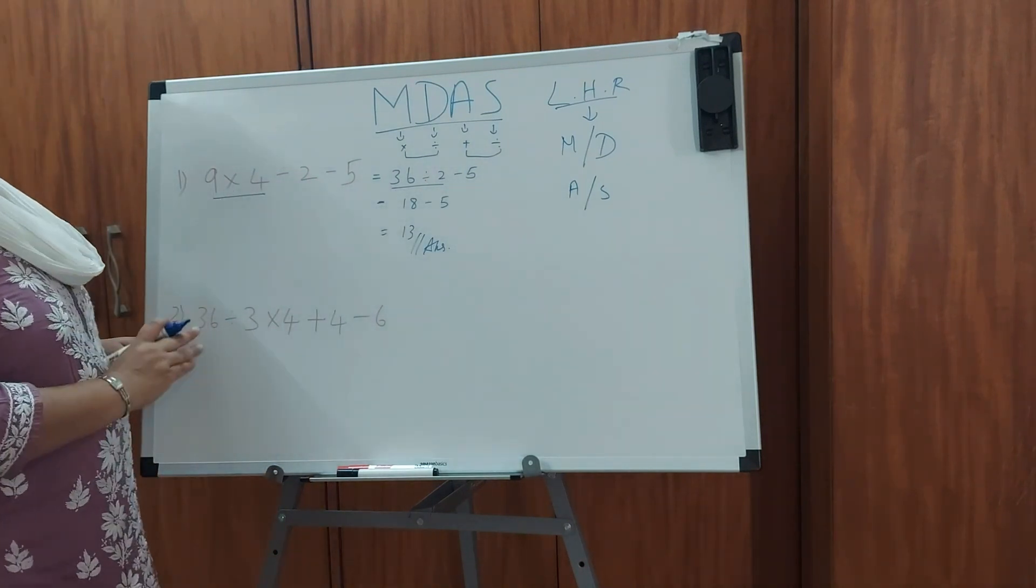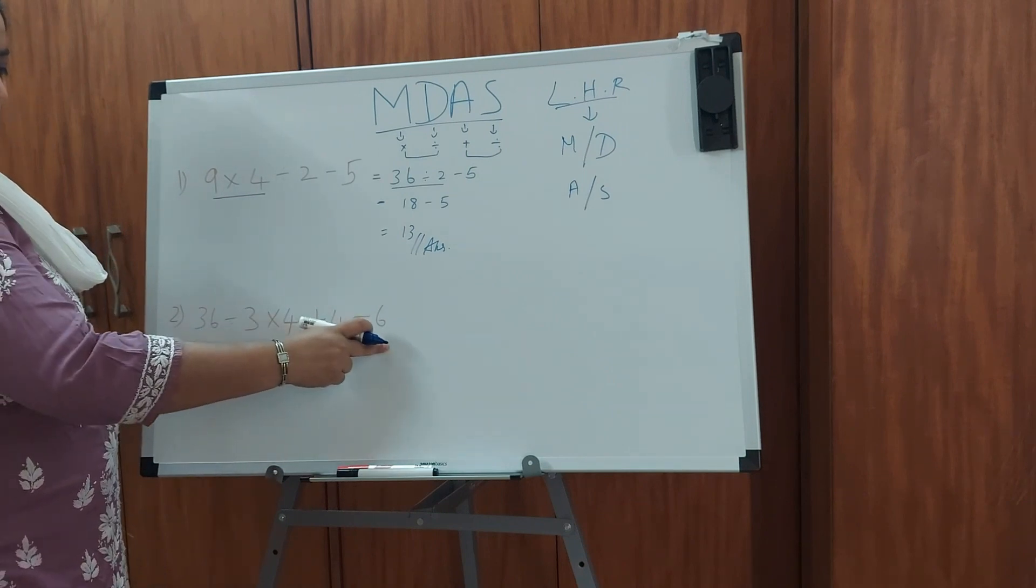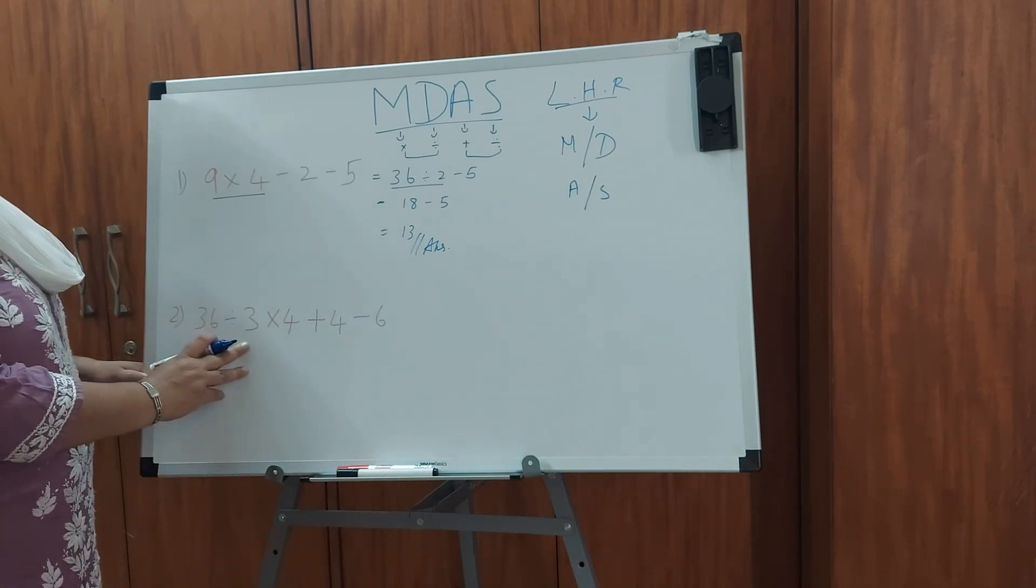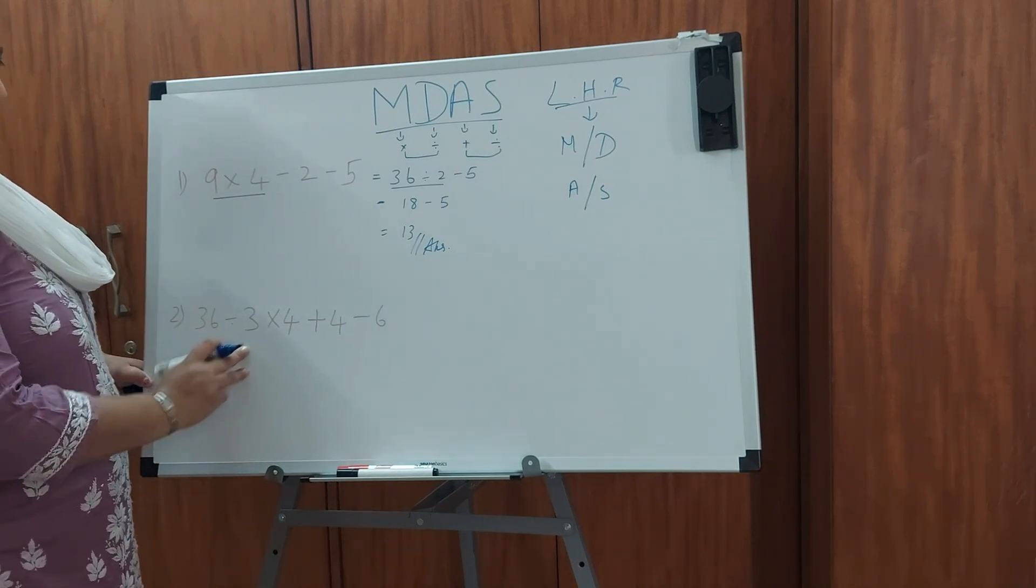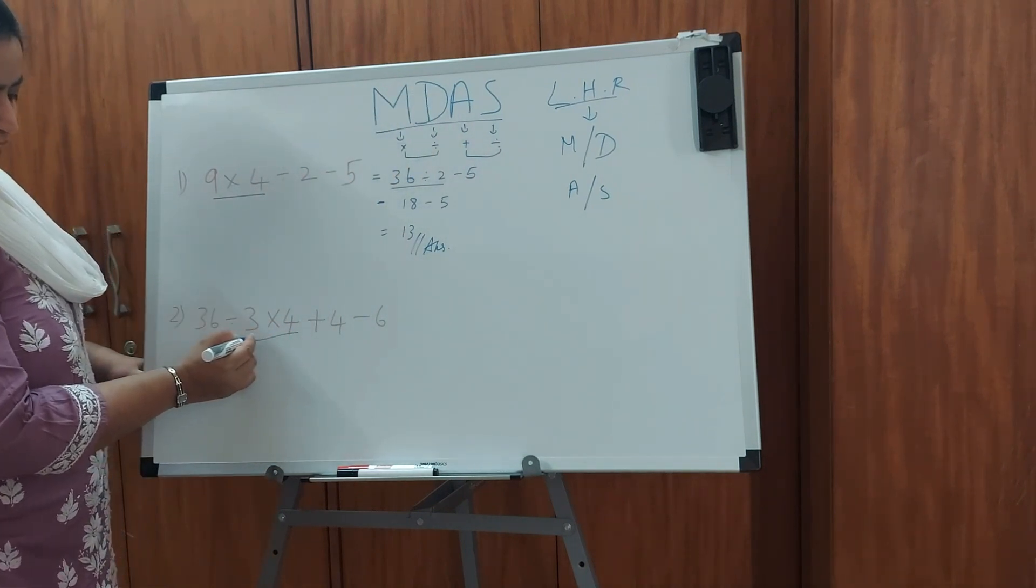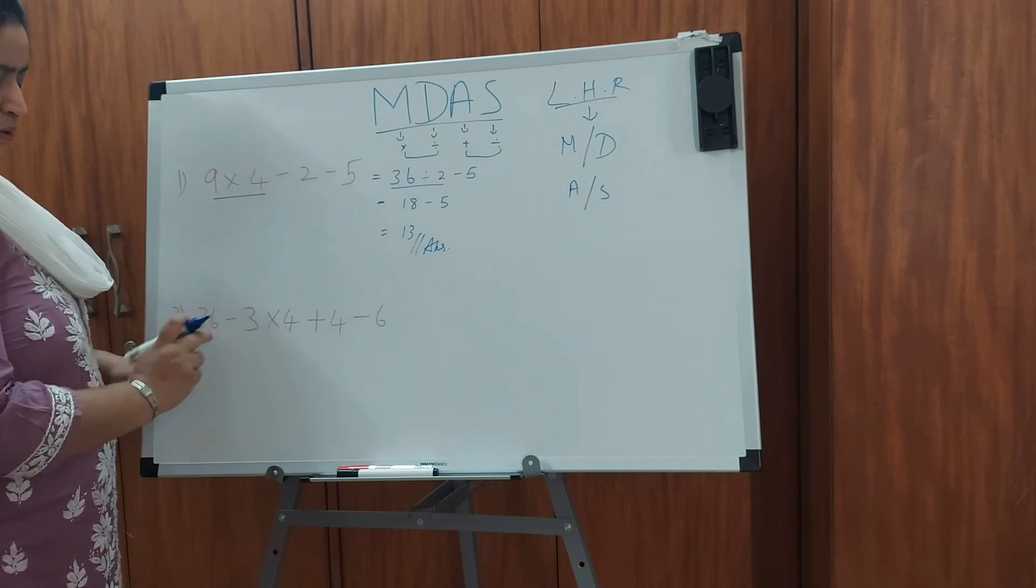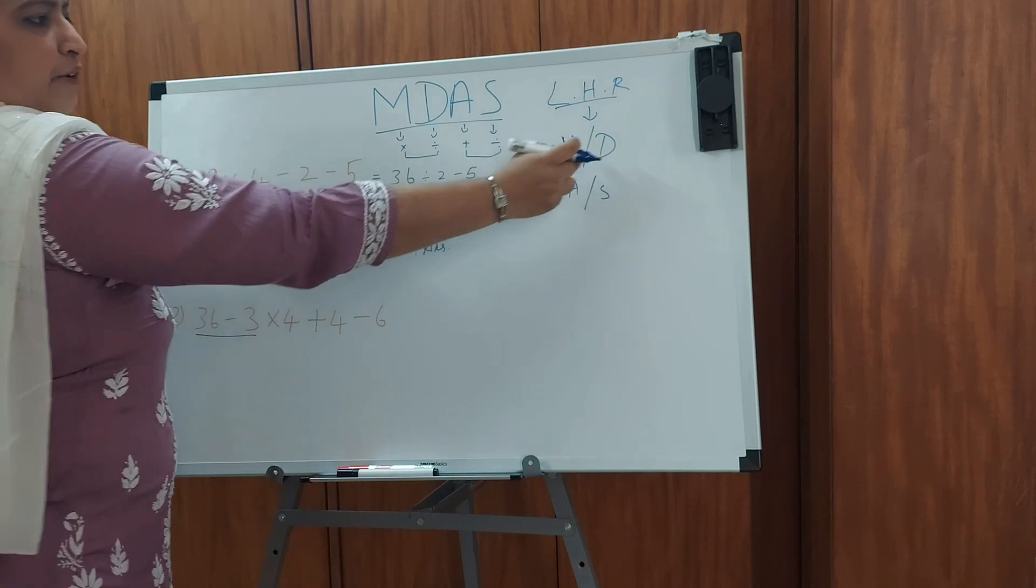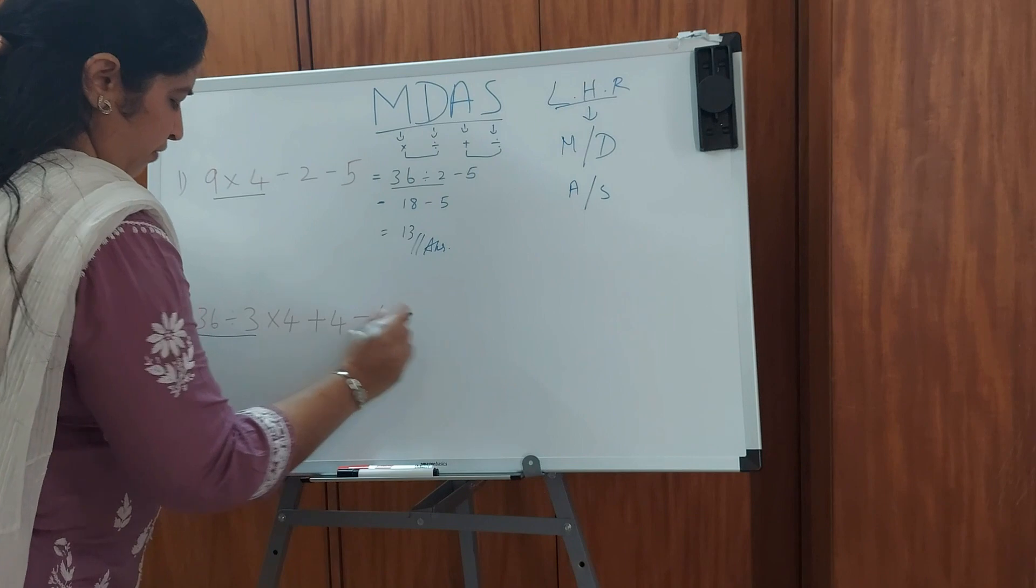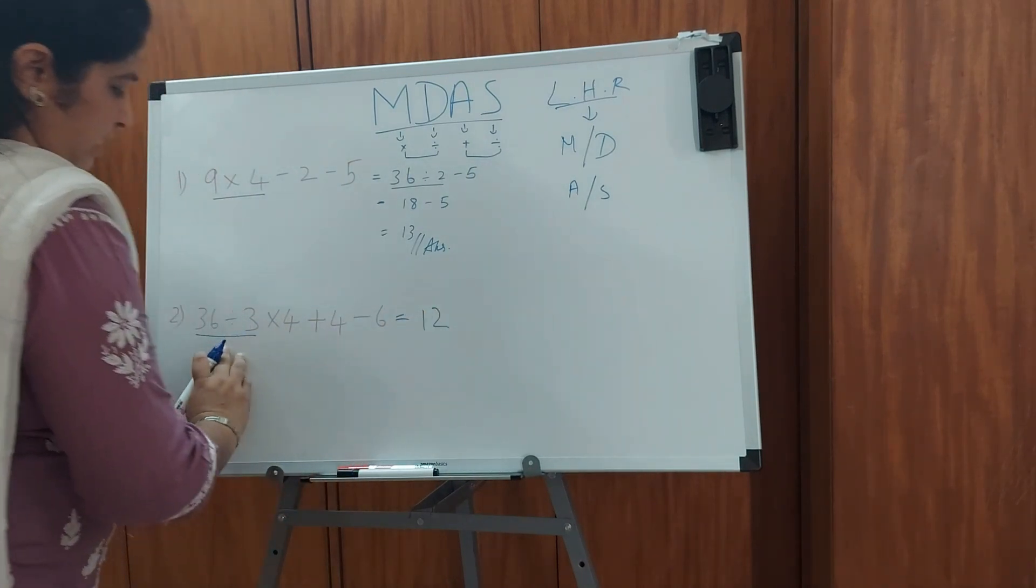So as you could see here, our second question is 36 divided by 3 times 4 plus 4 minus 6. We have all the 4 operators here. Now as you could see here, we have the division first. But what is our rule? Multiplication and division. So that rule can't be applied. You can't first multiply these two and then divide. This would be wrong. First you have to divide. That's what is our left hand rule. Whatever comes first, we will do it. So first let's divide 36 and 3. So if we divide 36 divided by 3, our answer is 12. So first is our division.